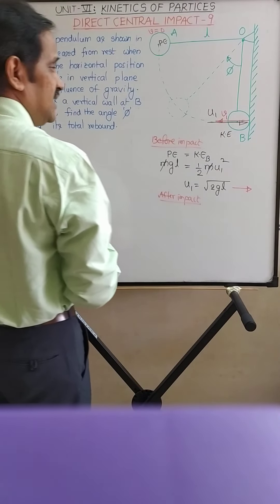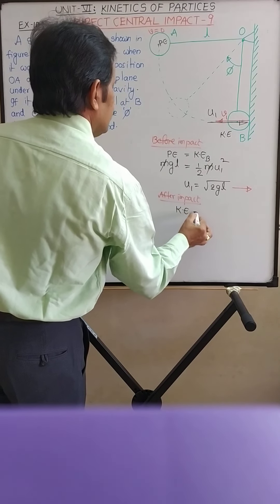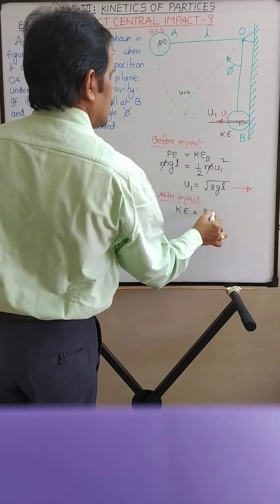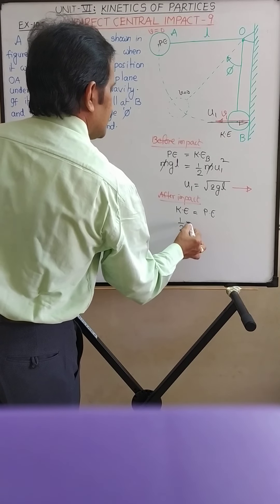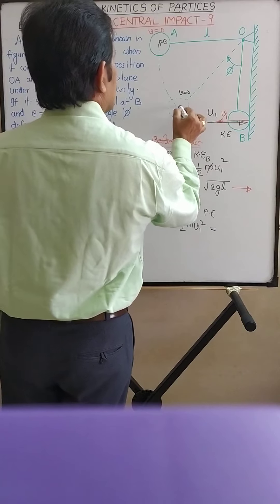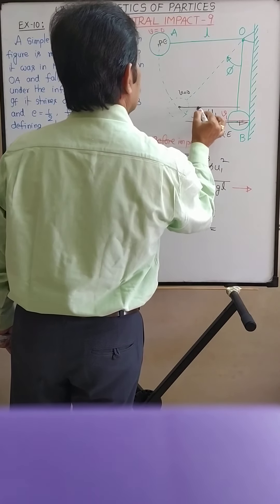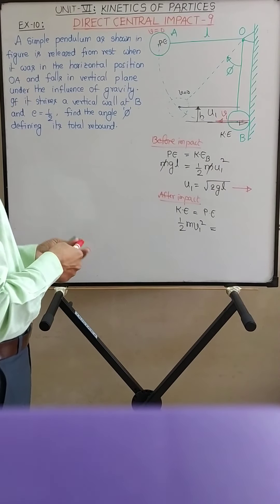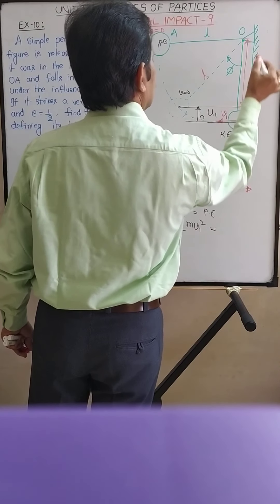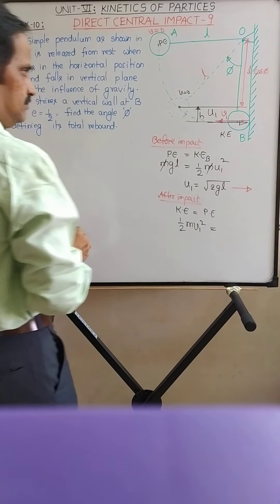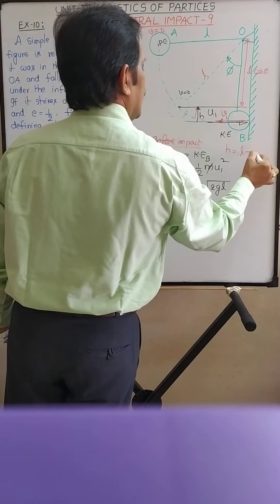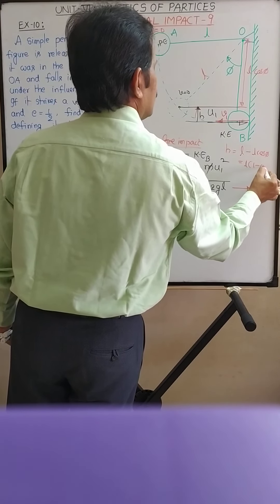After impact, the pendulum possesses kinetic energy. After swinging to maximum angle φ, that velocity becomes zero — meaning kinetic energy is converted into potential energy. The kinetic energy is half·m·V1², where V1 is the velocity of the pendulum after impact, and this equals the potential energy. We need to find the vertical rise of the pendulum through height H. The length of the pendulum is L, so the adjacent side will be L·cosφ. Therefore, H = L − L·cosφ, which is L(1 − cosφ).